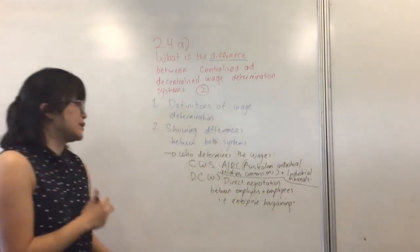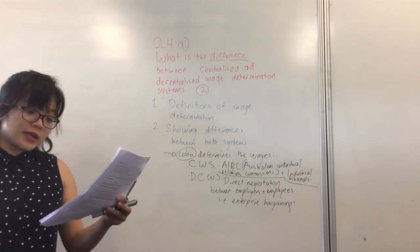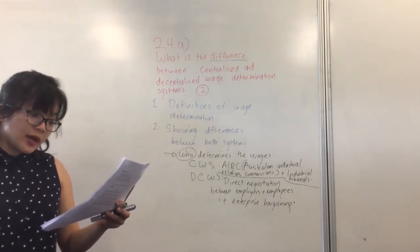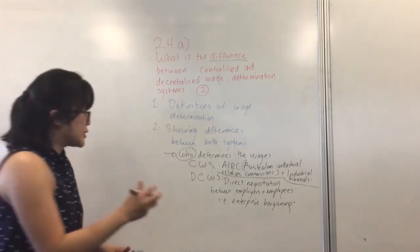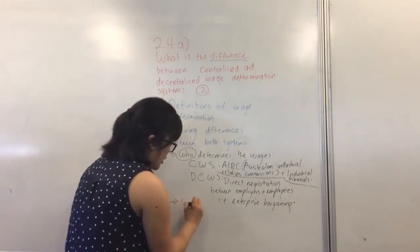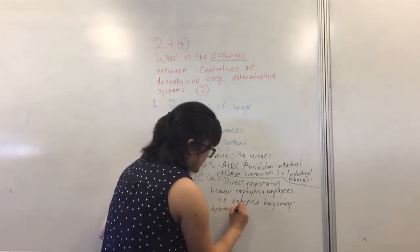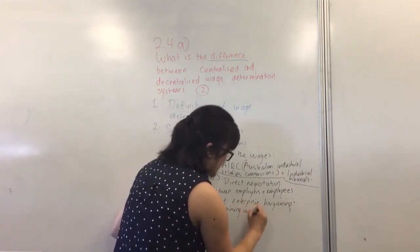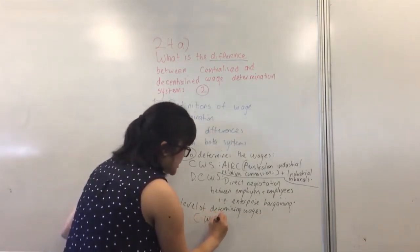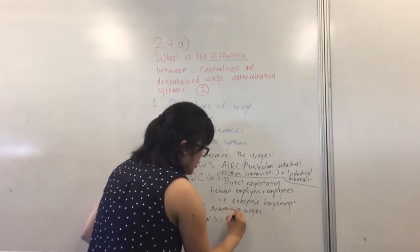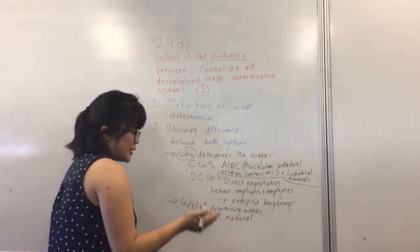So you looked at the differences of who determines the wages. Another sort of key difference as well is at which level - the level of determining wages. So who is affected? We know that in a centralized wage system this is done across the board, so it's a national kind of decision, a national level.